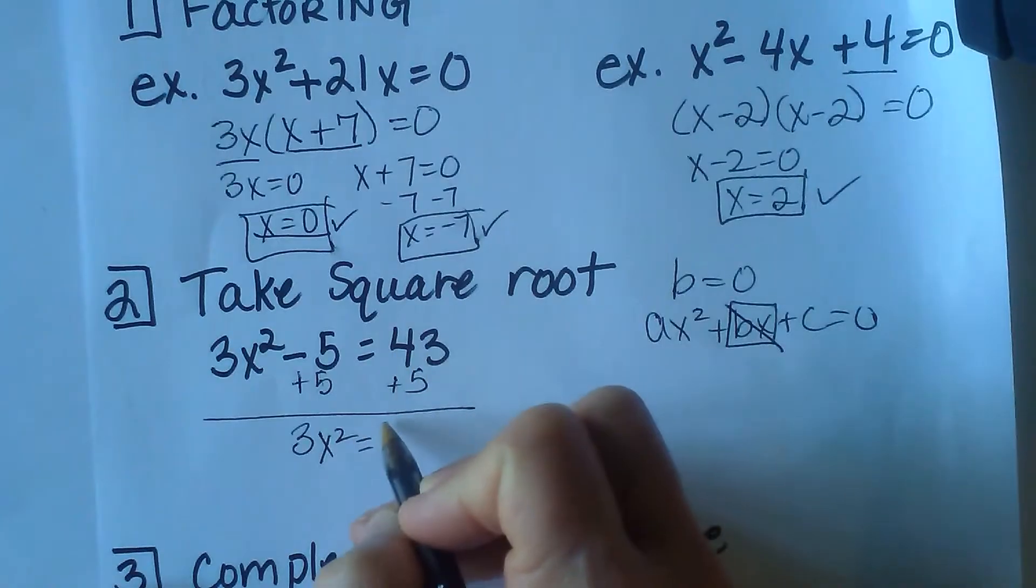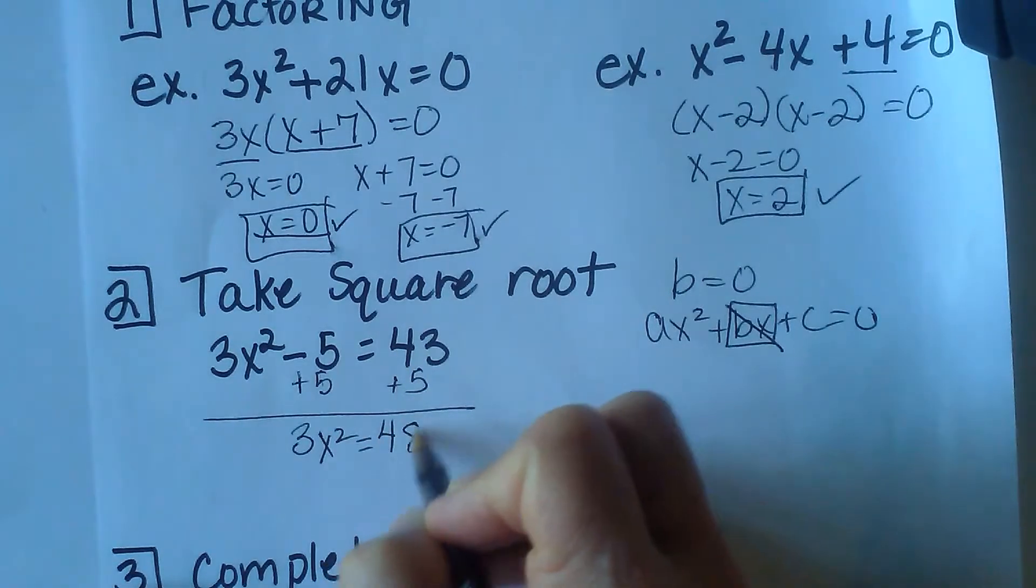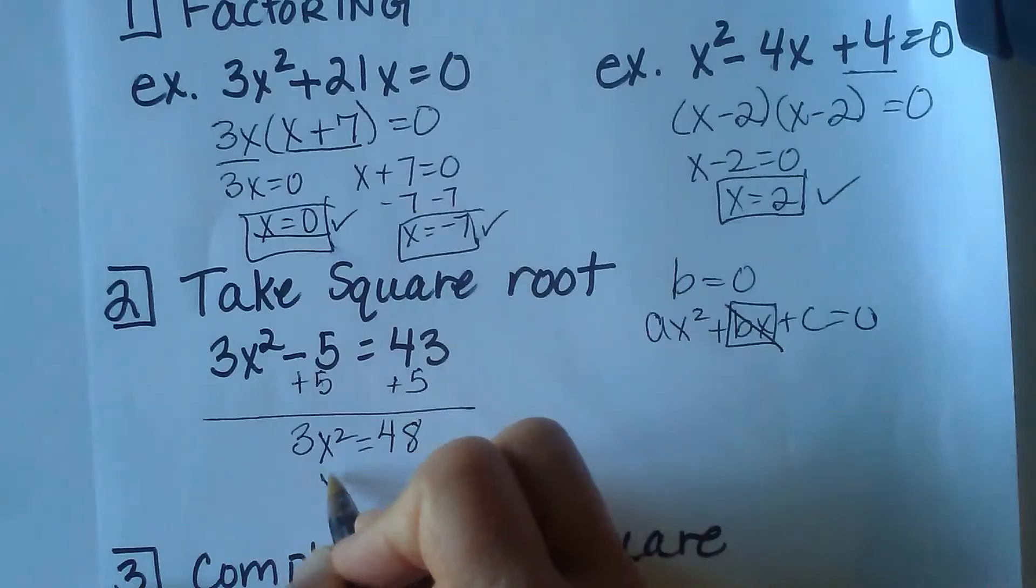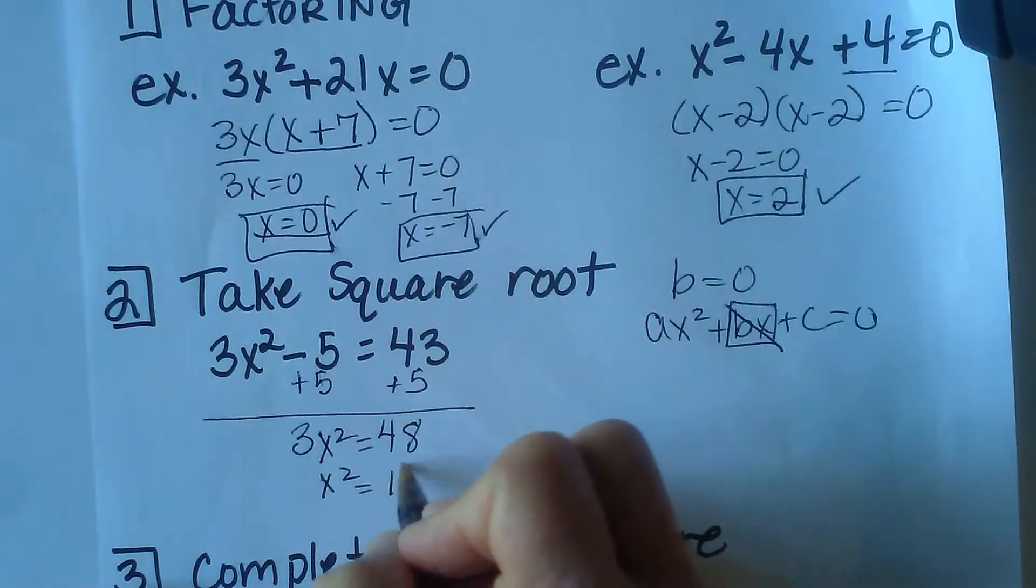Then we're going to add 43 and 5, and we get 48. Divide both sides by 3. So x squared is equal to 16. Now once you get to here, we're going to take the square root of both sides. So square root of the left side, square root of the right side.